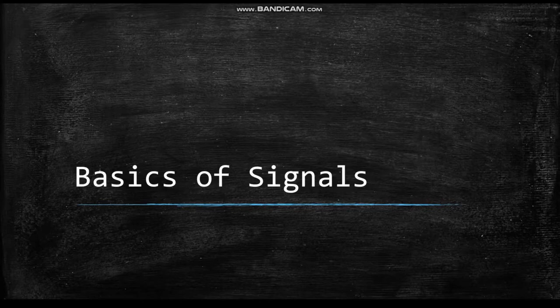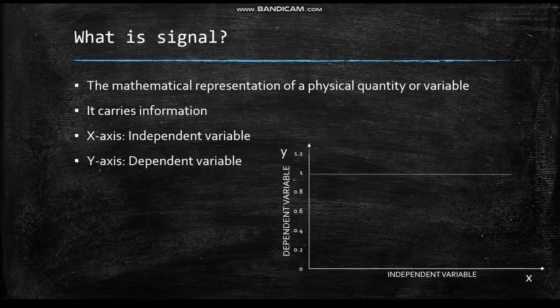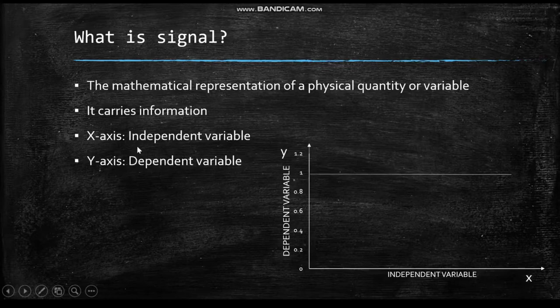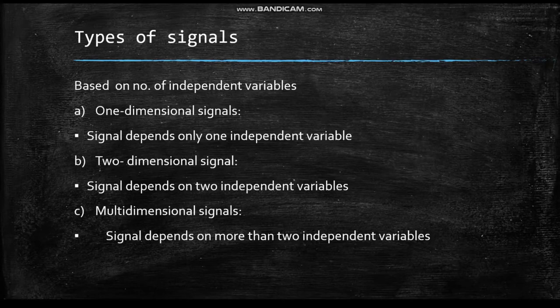Welcome to the session on basics of signals. Signals constitute an important part of our daily life. On a day-to-day basis we come across different types of signals like electrical signals, TV signals, speech signals, and so on. Anything that carries information can be called a signal. It is the mathematical representation of a physical quantity or variable which carries some information. Signals can be represented in graphical format in which the x-axis represents the independent variable and the y-axis represents the dependent variable.